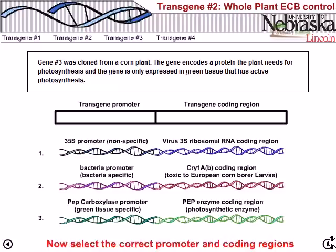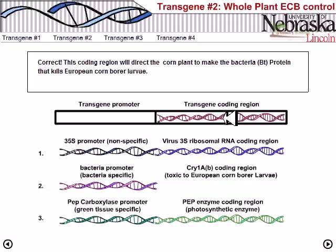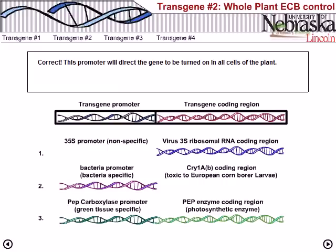Again we need to produce the protein toxic to the European corn borer, so we take gene two as the transgene coding region. In this case we do not need to express this protein only in the presence of photosynthesis — we need to express it all the time. So we must take the 35S non-specific promoter from gene one.